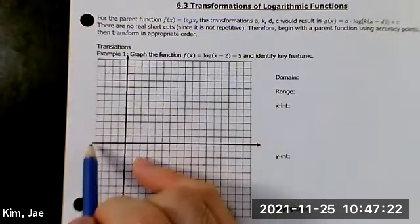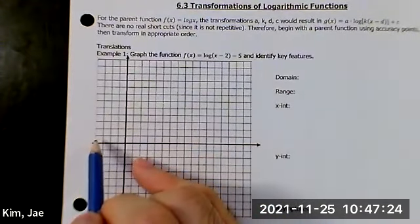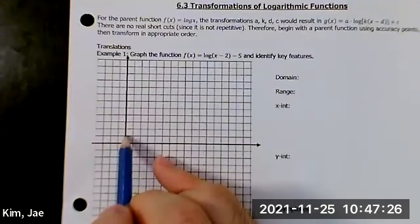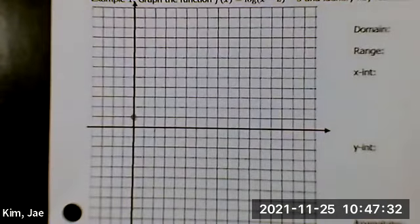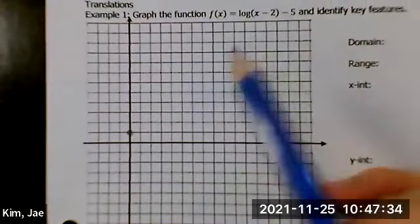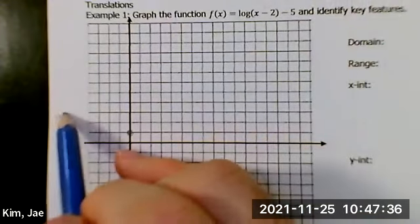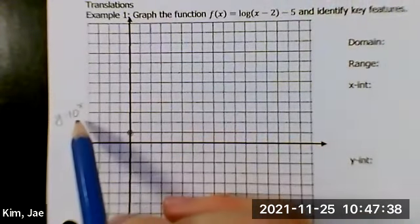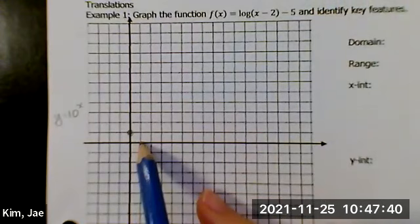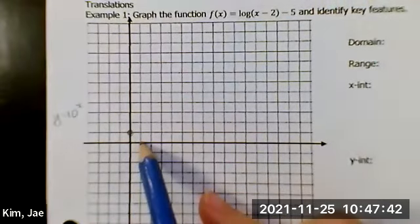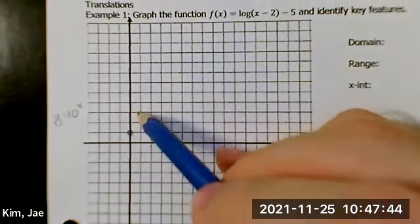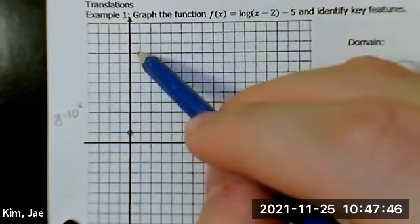It will all have a y-intercept of 0, 1. And then if this was y equals 10 to the power of x, if x is 1, what's y? 10. So 1, 2, 3, 4, 5, 6, 7, 8, 9, 10.